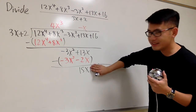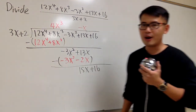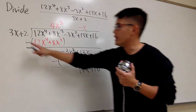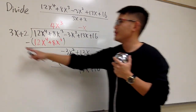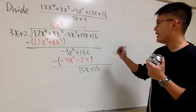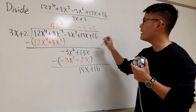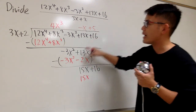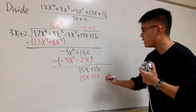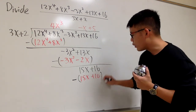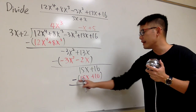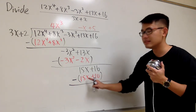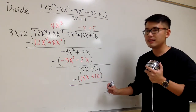Do the same thing again — cover this up, cover that up, just the first terms. What times 3x will give me 15x? The x already matches, so 3 times what gives 15? That's 5 — positive 5. So put down a positive 5. Then 5 times 3x gives 15x, and 5 times 2 gives plus 10. Subtract this whole thing: 15x minus 15x is 0, and 16 minus positive 10 is 6.